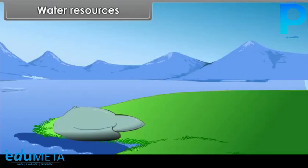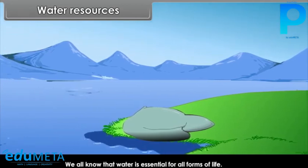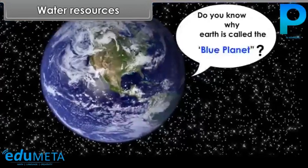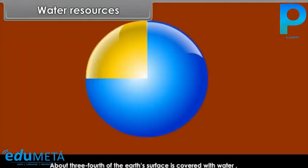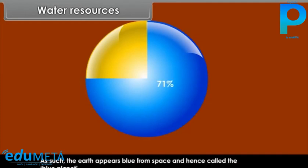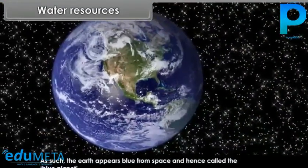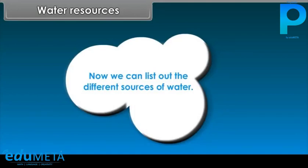Water Resources. We all know that water is essential for all forms of life. Do you know why Earth is called the blue planet? About three-fourths, or 71%, of the Earth's surface is covered with water. As such, the Earth appears blue from space and hence is called the blue planet. Now, we can list out the different sources of water.